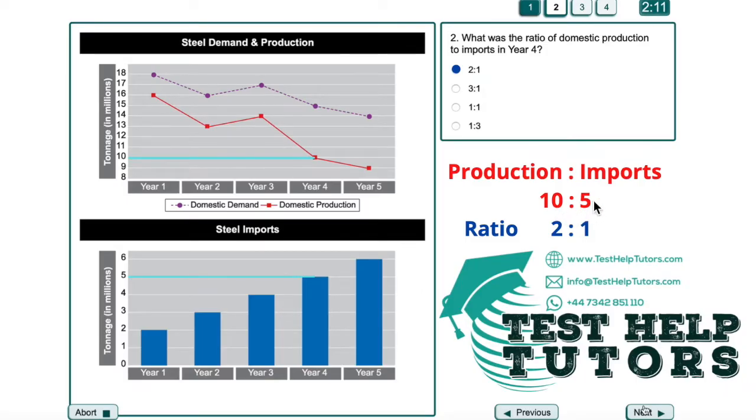If you want to simplify this ratio, all you have to do is divide both sides by the highest common factor, which is 5. So 10 divided by 5 is 2, 5 divided by 5 is 1. So the ratio is 2 to 1. Another way of thinking about this would be to notice 10 is double 5. So this is double this. So the ratio would be 2 to 1. So our answer is this.